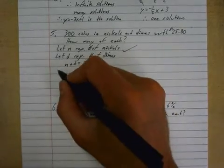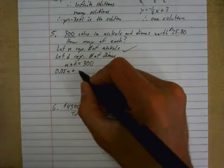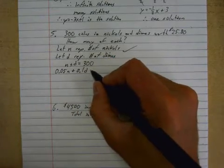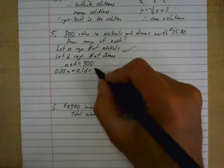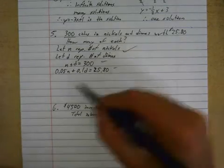Your second equation is the worth equation. You need to know that a nickel is worth five cents, so 0.05n plus 0.1d equals the amount of money it's worth, $25.80. Check, check. There's two more marks because you got your equations.